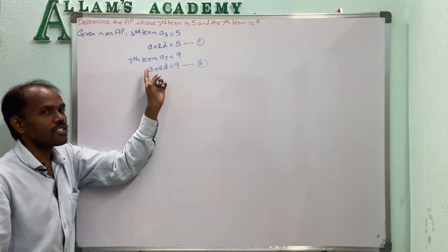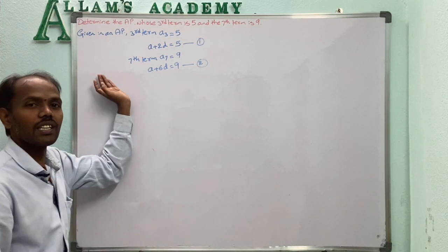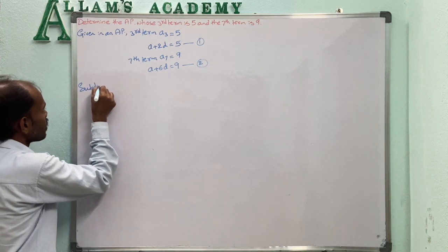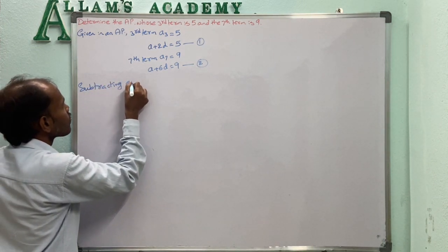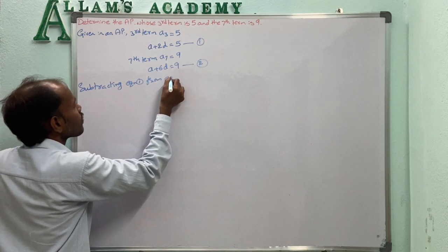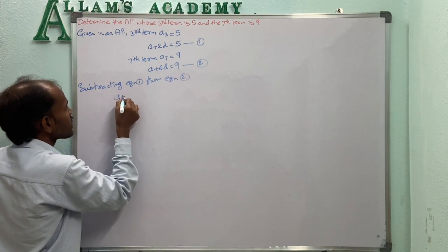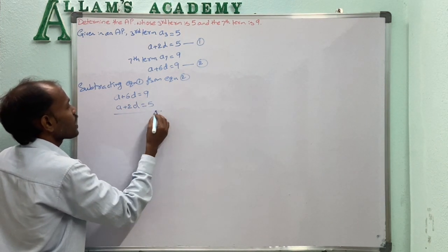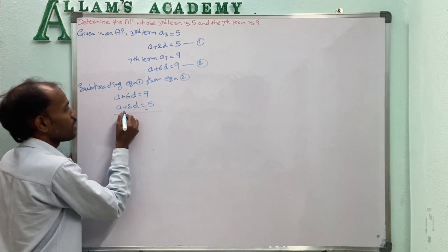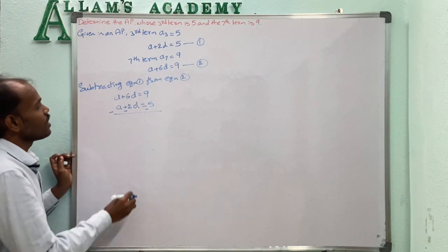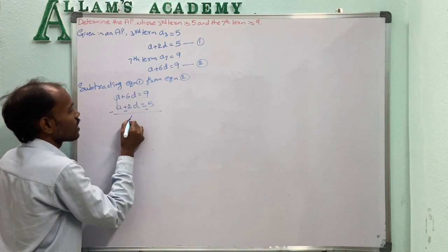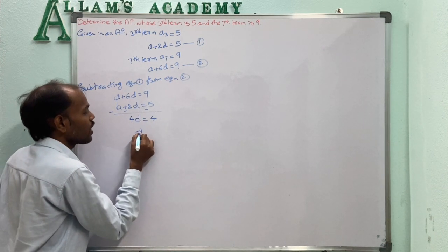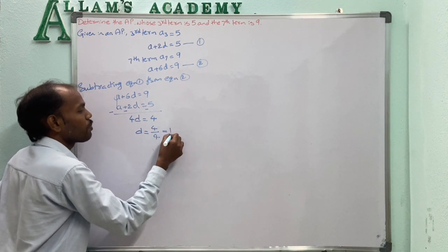Subtracting equation 1 from equation 2: (A + 6D) - (A + 2D) = 9 - 5. A minus A cancels. 6D - 2D = 4D and 9 - 5 = 4. So 4D = 4, giving D = 1. The common difference of the series is 1.